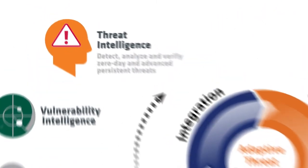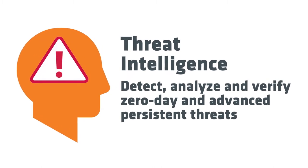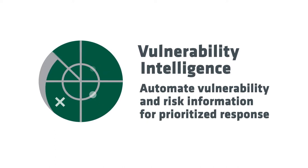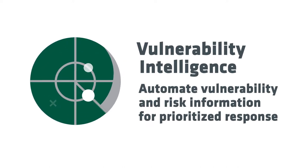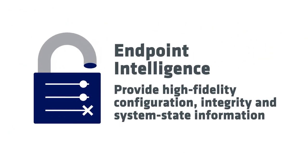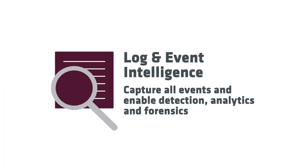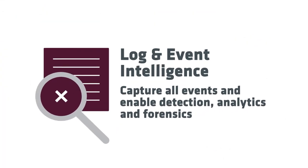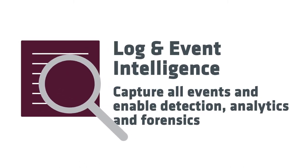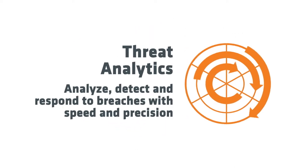Adaptive Threat Protection integrates four powerful security technologies essential for real-time detection and response: threat intelligence to detect, analyze, and verify zero-day and advanced persistent threats; vulnerability intelligence to automate vulnerability and risk information for prioritized response; endpoint intelligence to provide high-fidelity configuration, integrity, and system state information; and log event intelligence to capture all events and enable detection, analytics, and forensics.